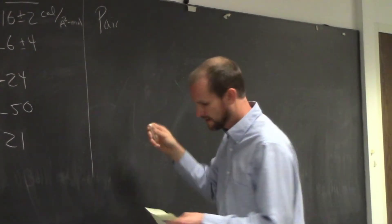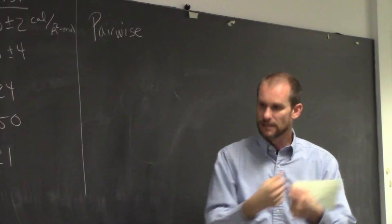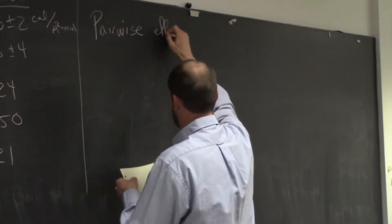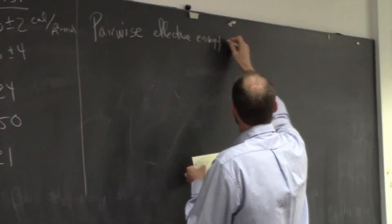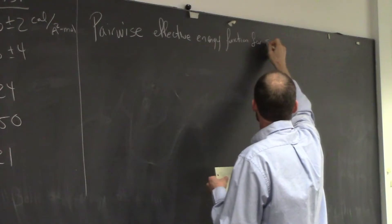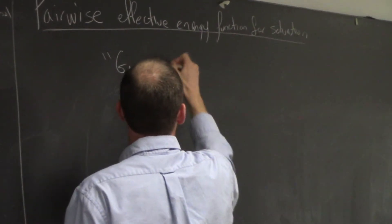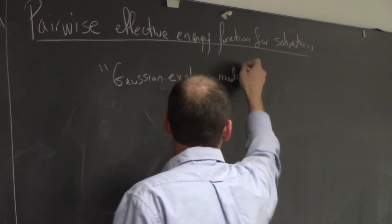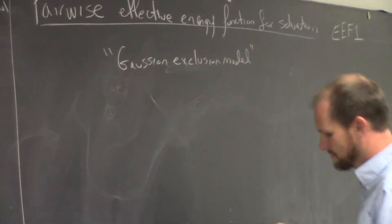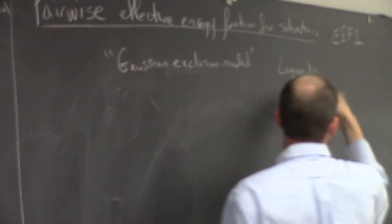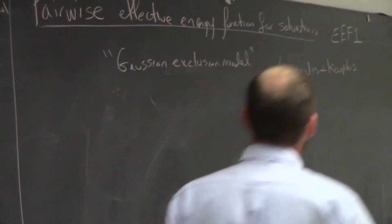Because we're looking for something fast, we like a pairwise calculation where you simply have to go over all pairs of atoms and look at how their interactions together contribute. So I want to talk about the pairwise effective energy function for solvation. This is also called the Gaussian exclusion model. Effective energy function is EEF1. It's also what it goes by. And this is by Lazaridis, Nemes Lazaridis, who's a chemical engineer, and Martin Karplus. We talked about him before. He got the Nobel Prize last year. This was published in 1999.